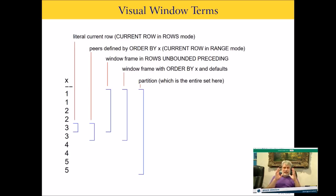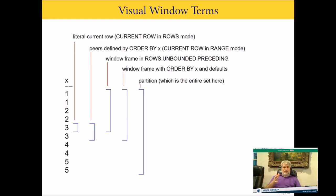This slide explains the frame terms visually. On the left I have a set of 10 values: 1, 1, 2, 2, 3, 3, 4, 4, 5, 5. The first bracket is the literal current row — this applies when you're in ROWS mode. The second bracket is the current row when you're in RANGE mode with ORDER BY, where current row includes all its peer rows — those with identical values.